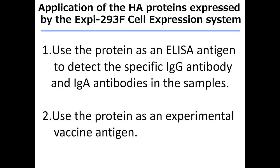I'd like to show you examples of the results of our experiments. The application of the HA protein expressed by the Expi293F cell expression system is used: first, as a protein antigen to detect specific IgG and IgA antibodies in the samples, and second, to use the protein as experimental vaccine antigens.